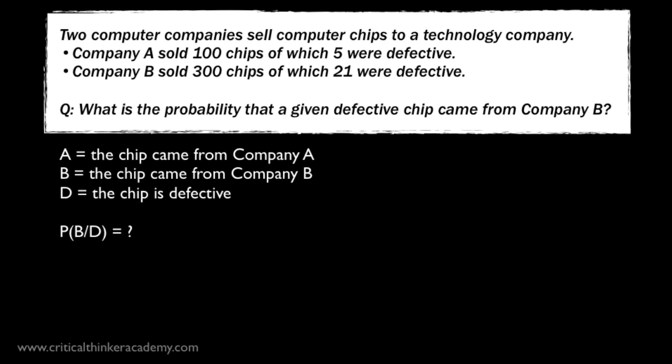So let A equal the chip came from Company A, let B equal the chip came from Company B, and let D equal the chip is defective. The question we are being asked to solve is, what is the probability of B that the chip came from Company B, given D that it was defective?